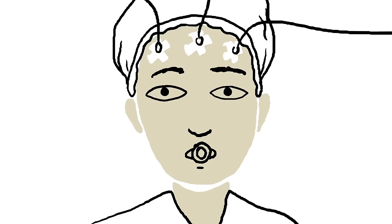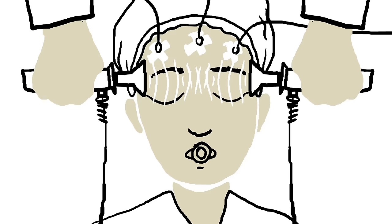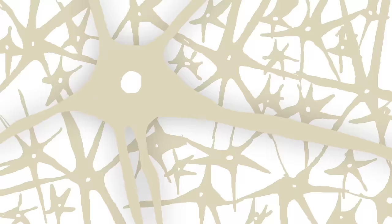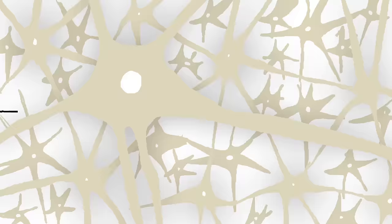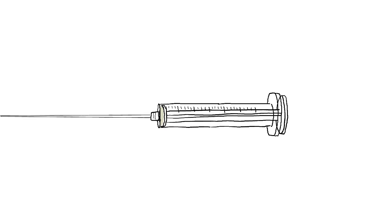Modern ECT is very different. While a patient is under general anaesthesia, electrodes deliver a series of mild electrical pulses to the brain. This causes huge numbers of neurons to fire in unison, a brief, controlled seizure. A muscle relaxant keeps spasms from spreading to the rest of the body.